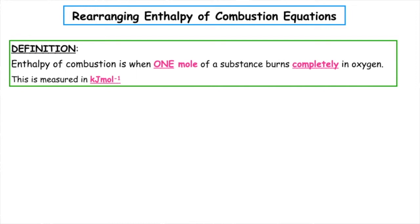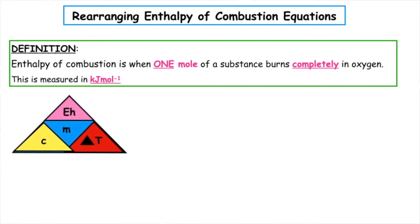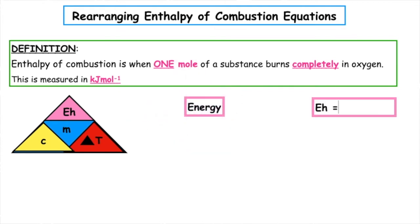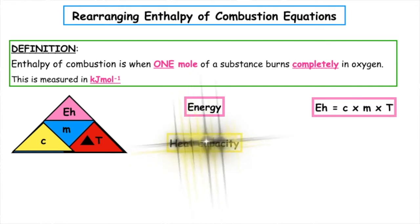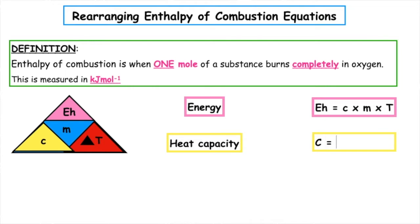You may be asked to rearrange using the mnemonic 'Every House Can't Make Triangle Toast.' If we wanted to work out the energy, the formula would be E_h is equal to C times m times delta T. If you wanted to work out C, which is the heat capacity, C is equal to E_h divided by m times T.